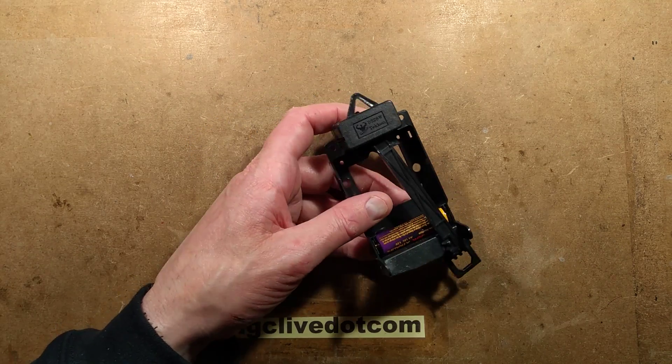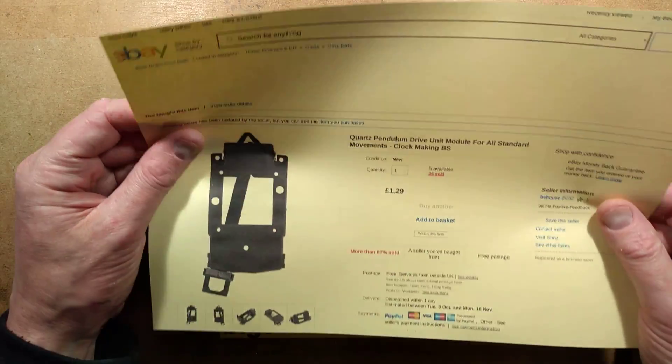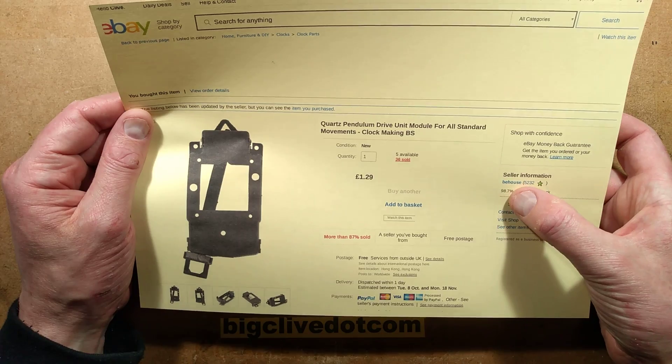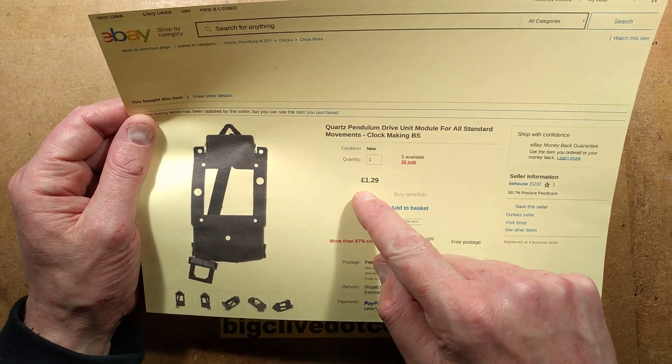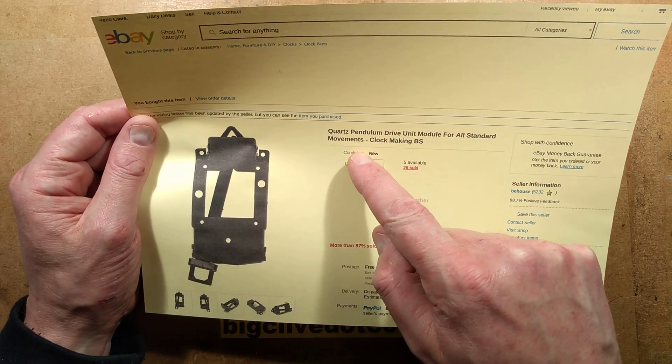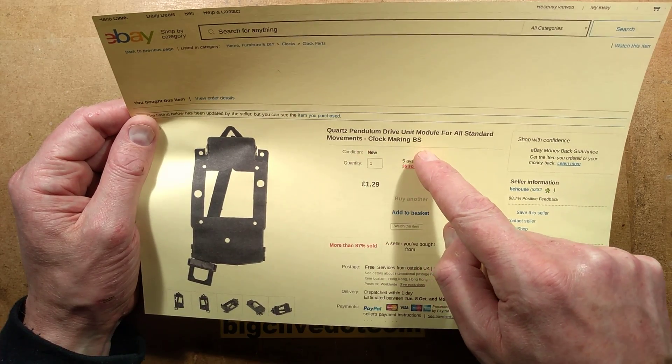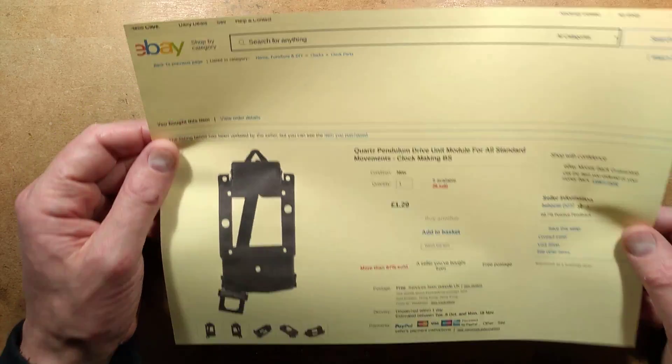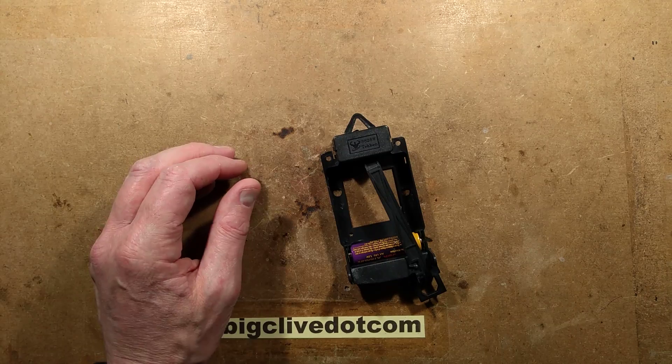This came from eBay, predictably. It came from a seller called B-House, B-E-H-O-U-S-E. It cost a measly £1.29, and it says quartz pendulum drive unit module for all standard movements. I ordered a couple because I thought, let's analyze them and see if the circuitry is something special.